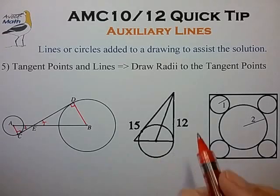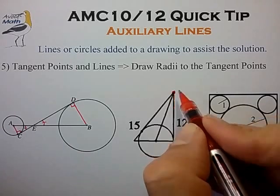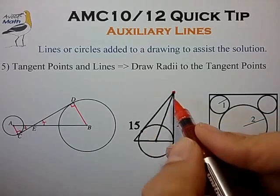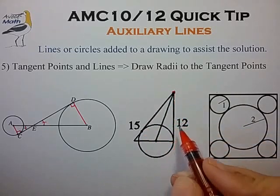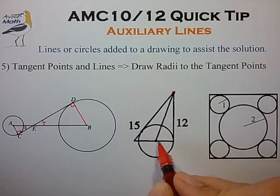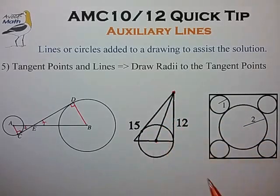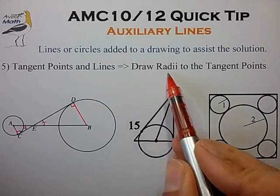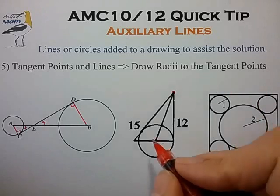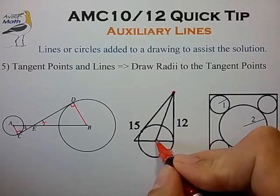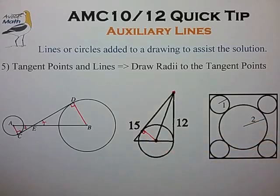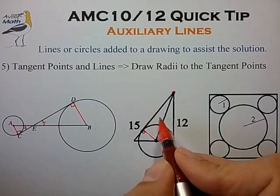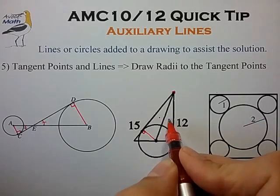In our second example we have a point outside of a circle and two tangent lines drawn to that circle, along with a line drawn to the center of the circle. Here again the natural auxiliary line to draw is the radius to any tangent point, so we draw the radius from the center to the tangent point. When we do that we quickly reveal that what we have now are two congruent triangles.